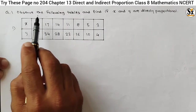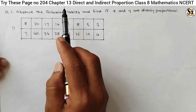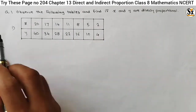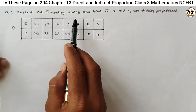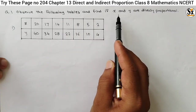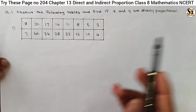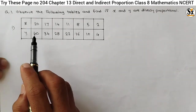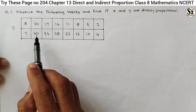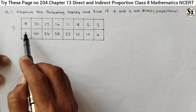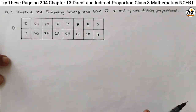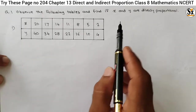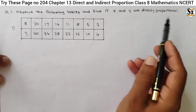See the question under the Try-G section, page number 204, chapter Direct and Inverse Proportion, Class 8 Mathematics. The question is given: observe the following table and find if x and y are directly proportional. There are different questions. The first question is given — this table is given — and x and y values are given for x and for y in the table. We have to find whether x and y are directly proportional.